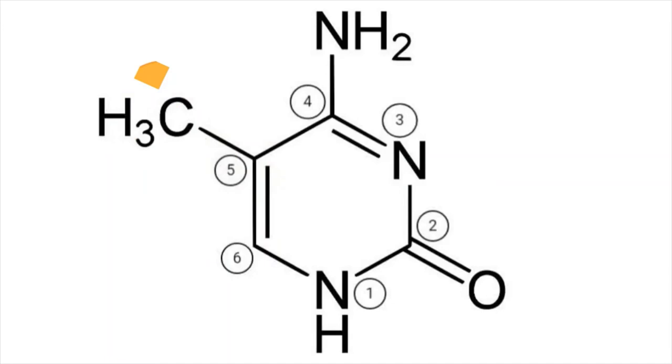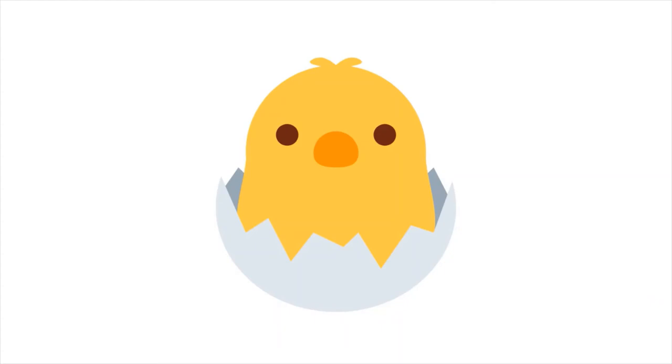At the fifth carbon position of cytosines, a methyl group can be attached by a protein called DNA methyltransferase. This is the process of DNA methylation. The methyl group serves as a tag, ensuring the copy of the gene will stay off for future generations.